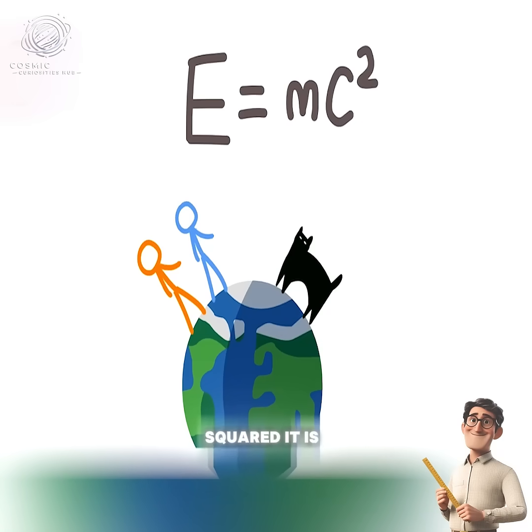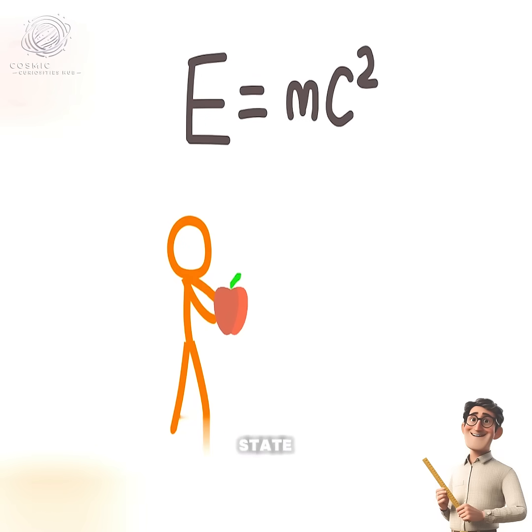E=mc² is arguably the most famous physics equation in the world, but what might surprise you is that this equation is not complete. It only describes the energy of an object in a rest state.